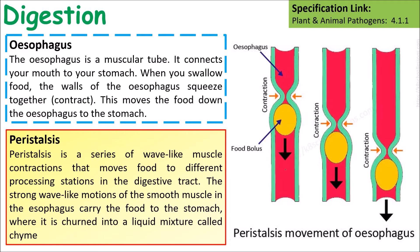After the mouth, the food is pushed down the esophagus towards the stomach by a process called peristalsis. Peristalsis is a wave of muscle contractions that squeeze the food all the way from the mouth down to the stomach. It is not gravity pulling it down — the food is being pushed by muscles contracting.